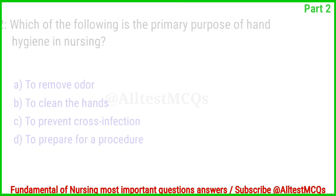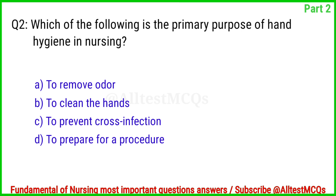Question No. 2. Which of the following is the primary purpose of hand hygiene in nursing? Correct answer is Option C: To prevent cross infection.